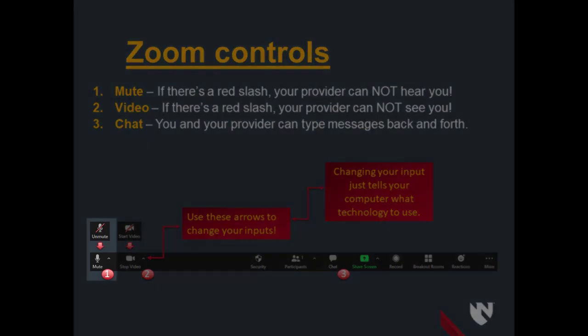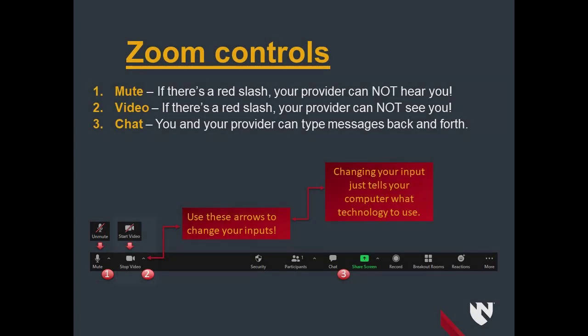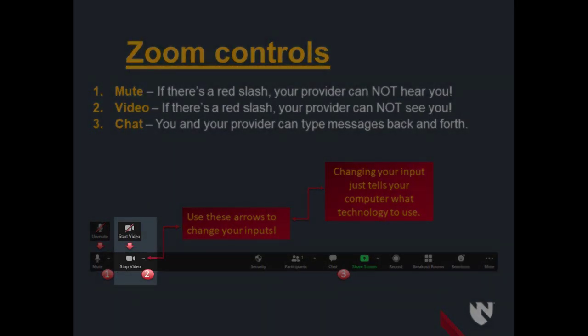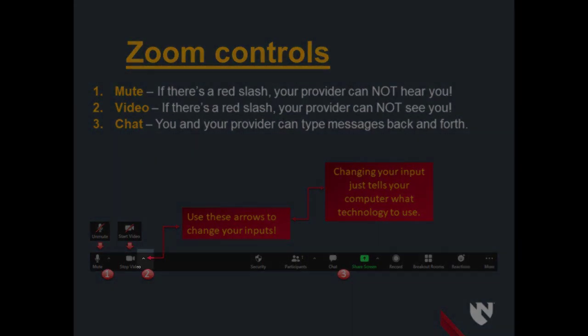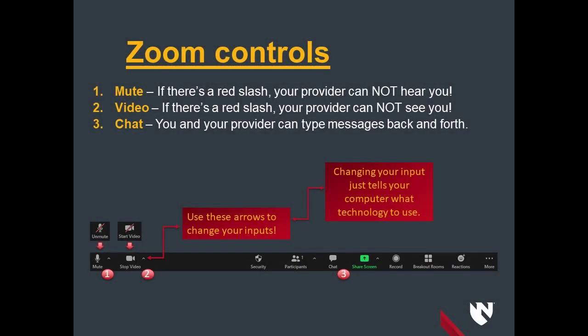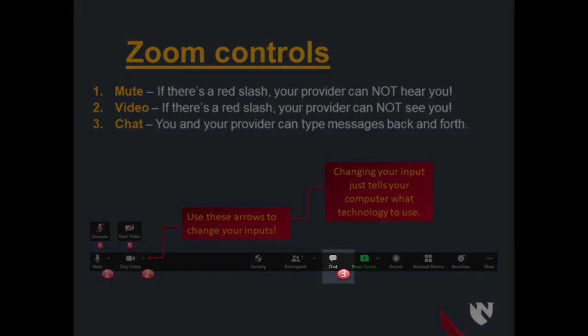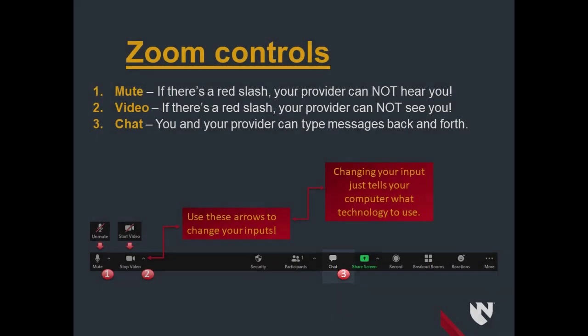The mute button controls whether your provider can hear you. The video button controls whether your provider can see you. If you're having issues with either of these, you likely need to check your inputs by using the small arrows next to each of those buttons — these just tell your computer what piece of technology to use. The chat function allows you and your provider to send typed messages back and forth or share links to other webpages. Once your appointment is over, your provider will end the meeting for you.